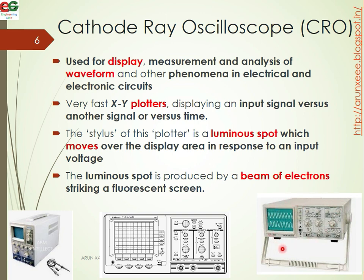The cathode ray oscilloscope is mainly used for display, measurement, and analysis of waveforms and other phenomena in electrical and electronic quantities. It has very fast X-Y plotters, which is the main advantage. The pointer is a luminous spot which moves over the display in response to the input voltage.